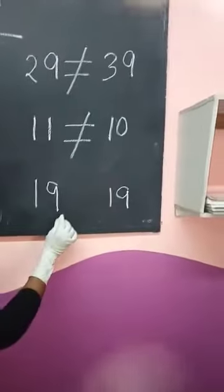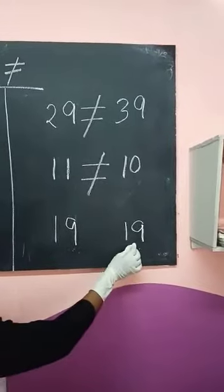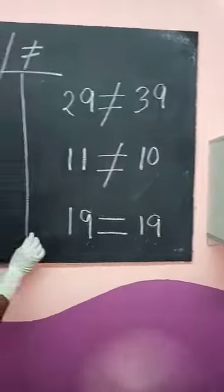Next, 1, 9, 19, 1, 9, 19. Both numbers are equal. So, we will put a sign of equal. Okay?